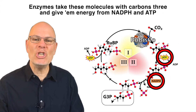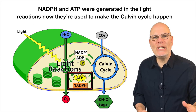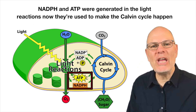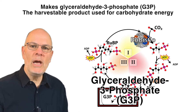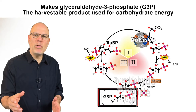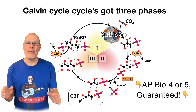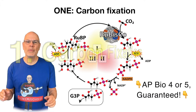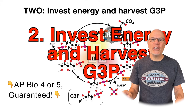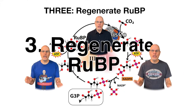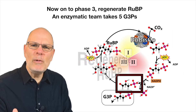Enzymes take these molecules of Calvin's Phase 2 and give them energy from NADPH and ATP. NADPH and ATP were generated in the light reactions. Now they're used to make the Calvin Cycle happen, making Glyceraldehyde 3-phosphate, G3P — the harvestable product used for carbohydrate energy. Calvin Cycle's got three phases. One, carbon fixation. Two, invest energy, harvest G3P. Three, regenerate R-U-B-P.